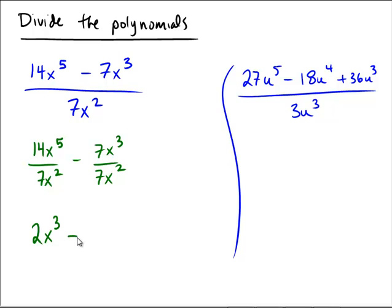In the last part, we have 7x cubed and 7x squared. The 7 and the 7 is reduced completely. You're just left with one copy of x. And so the final answer is 2x cubed minus x.